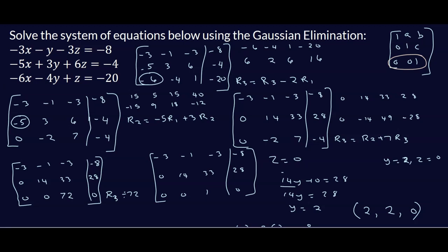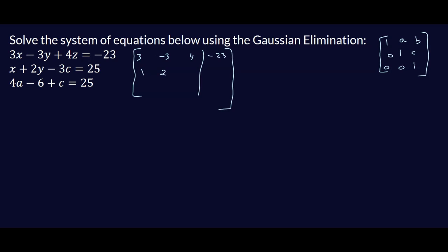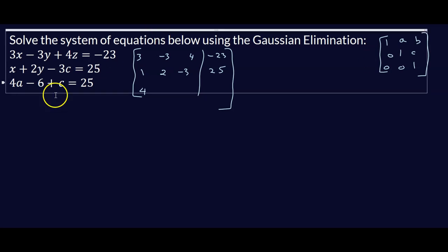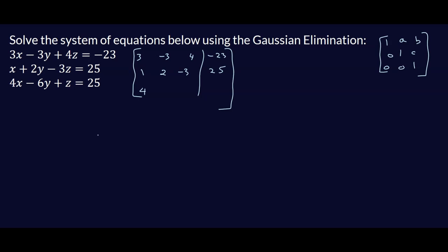Now let's attempt a second example. The augmented matrix is: row 1: 3, negative 3, 4, negative 23; row 2: 1, 2, negative 3, 25; row 3: 4, negative 6, 1, 25. We're aiming for row echelon form, so let's build the augmented matrix and begin our row operations.